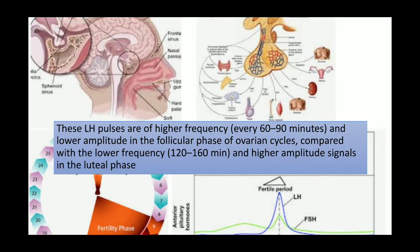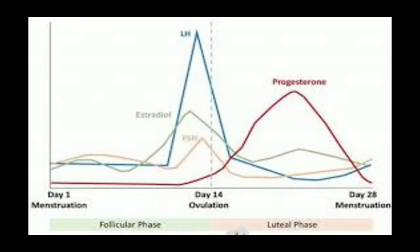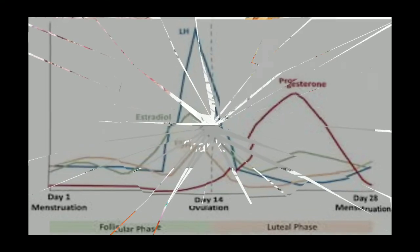LH pulses occur at a frequency of every 60 to 90 minutes, with lower amplitude in the follicular phase of the ovarian cycle compared to lower frequency and higher amplitude in the luteal phase. In summary: in the follicular phase, LH pulses are of low amplitude but high frequency; in the luteal phase, they are of high amplitude but low frequency.